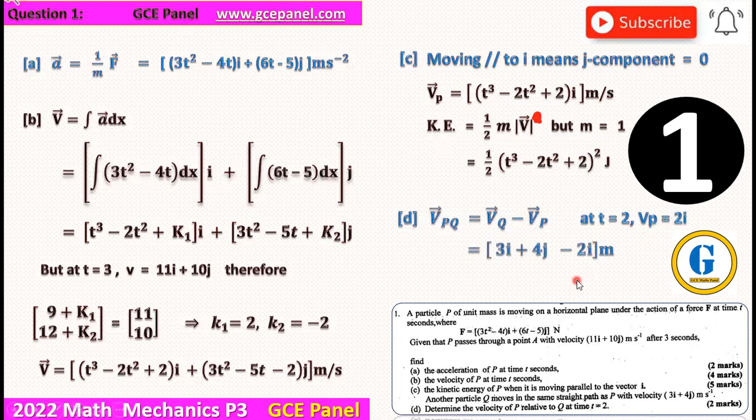So when we substitute, we are just going to have 2i. So from here, we have 3i plus 4j minus 2i. And that's just going to give us i plus 4j meters per second.